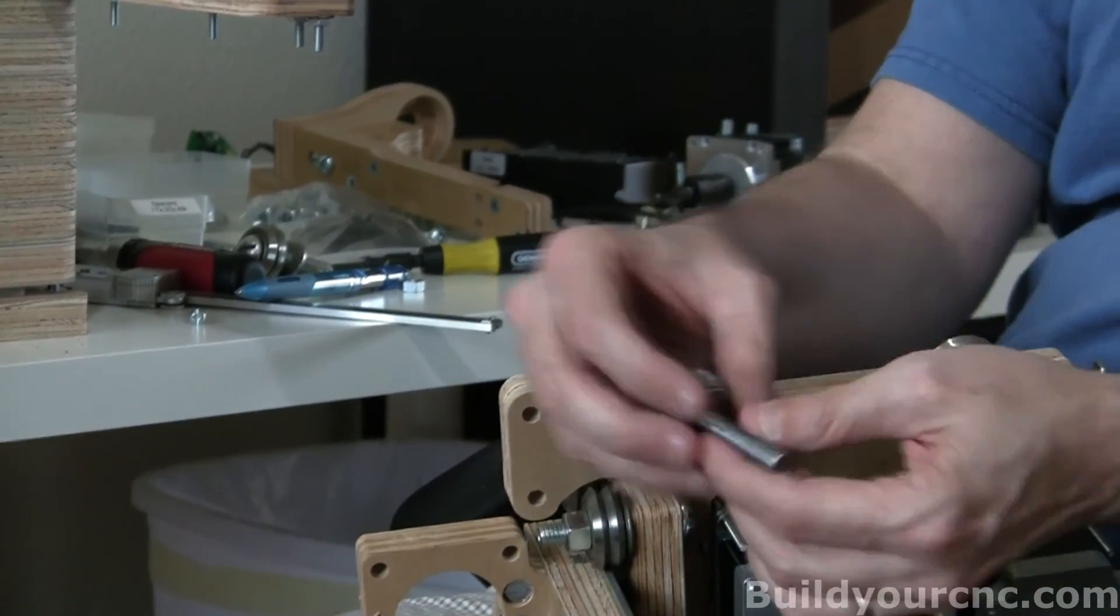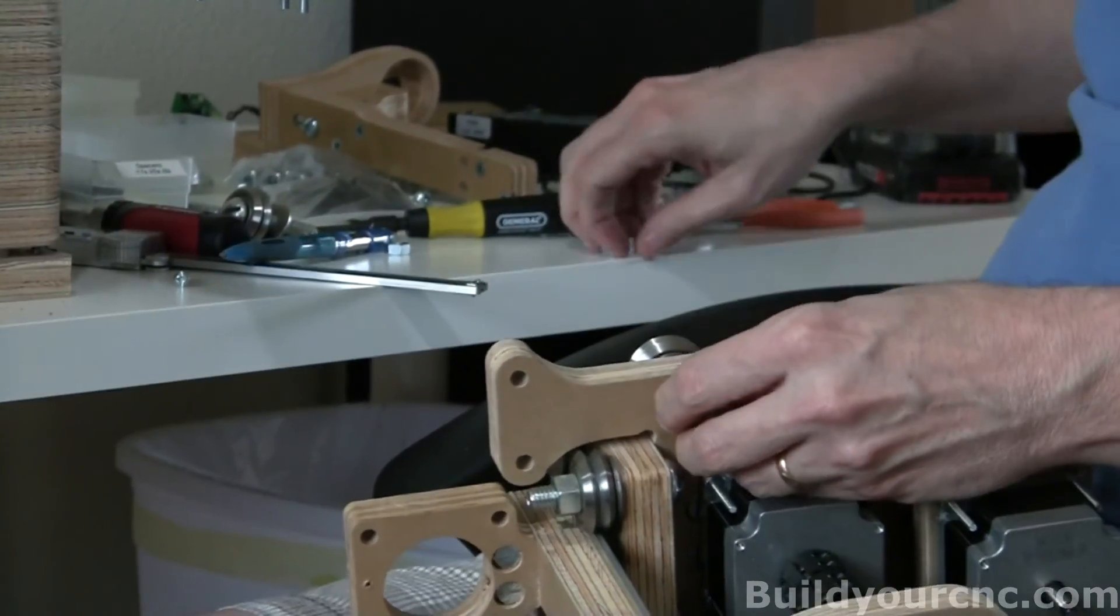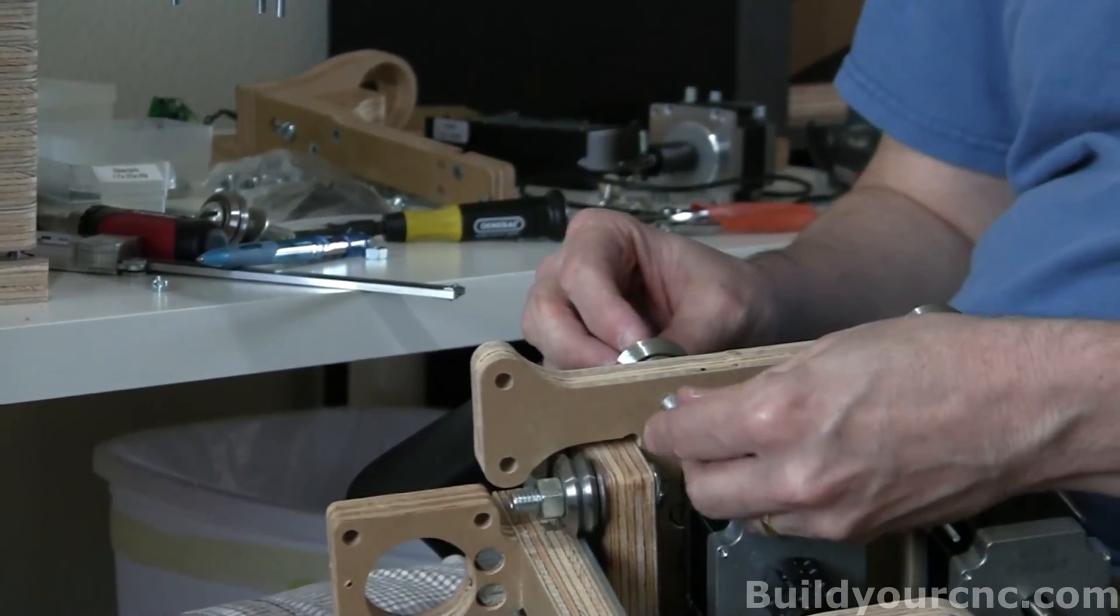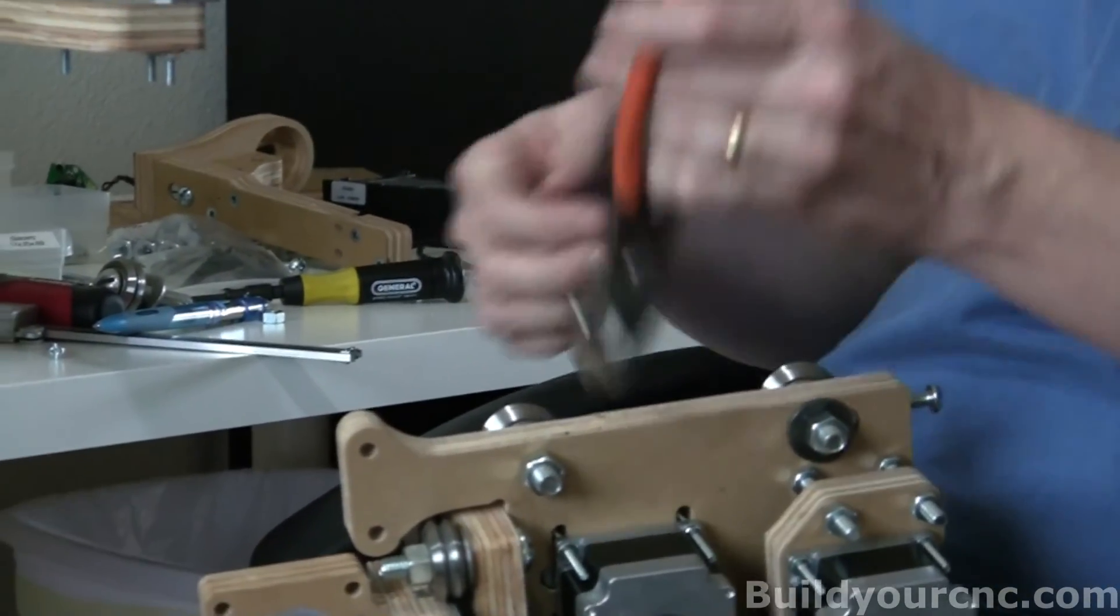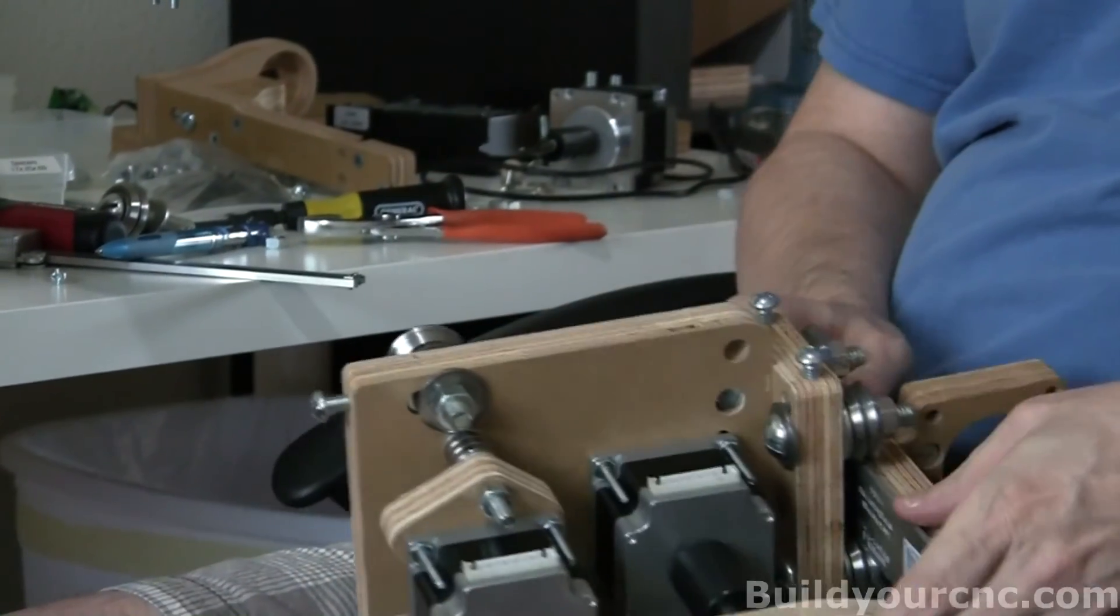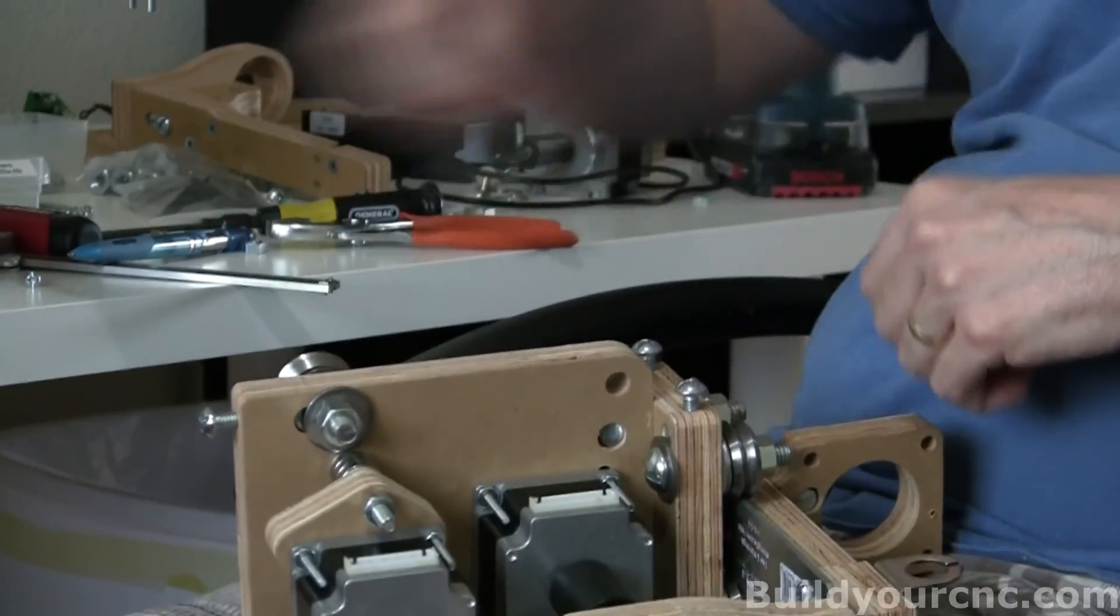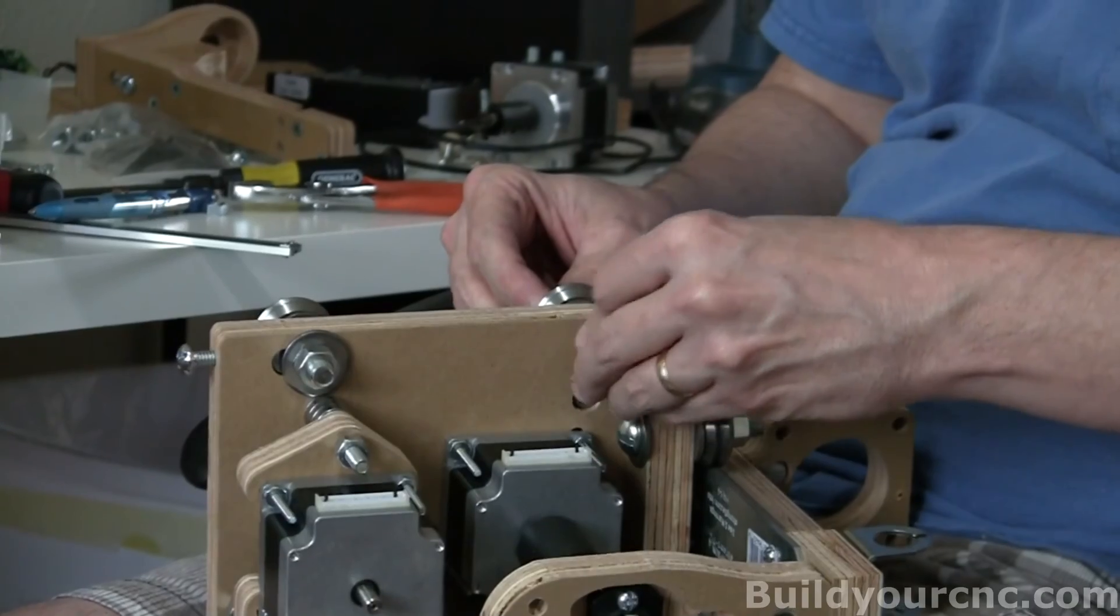thin washer, large washer. And then only a nut on the other side because this one doesn't adjust. And you can go ahead and tighten this up all the way. And on the other side, do the same thing. Rinse and repeat.